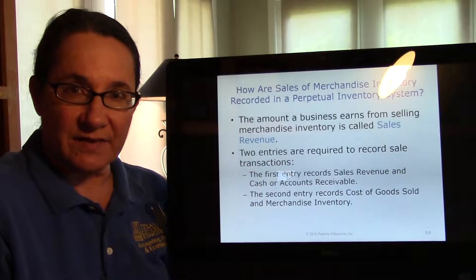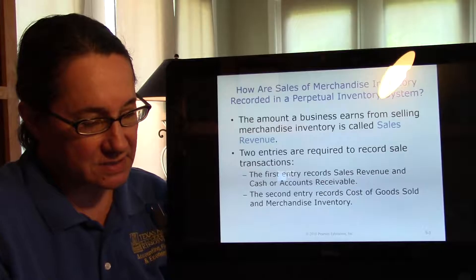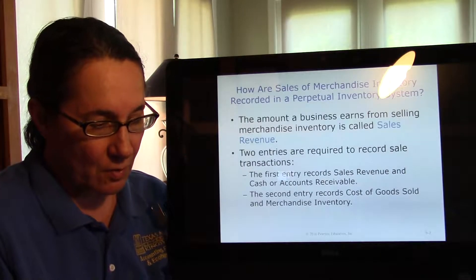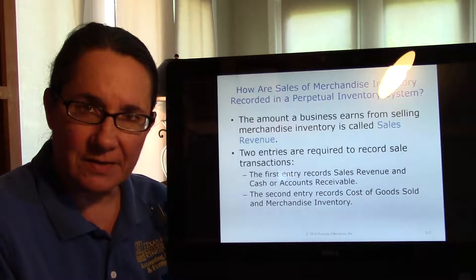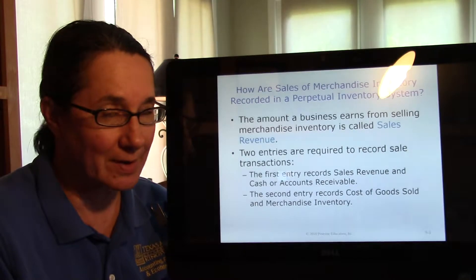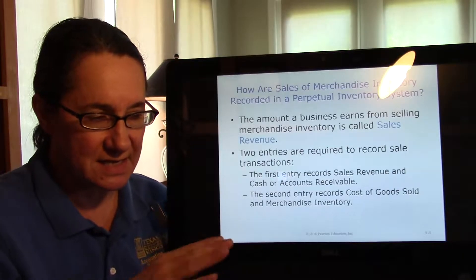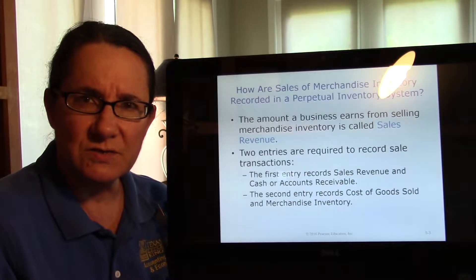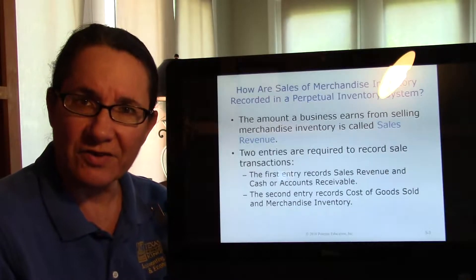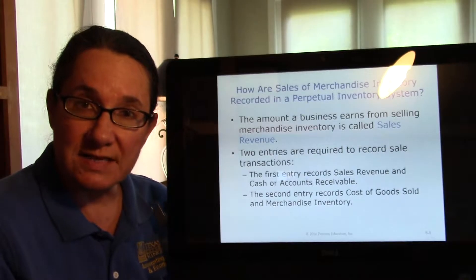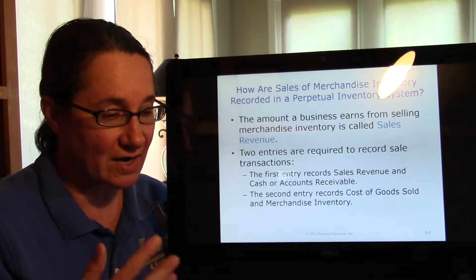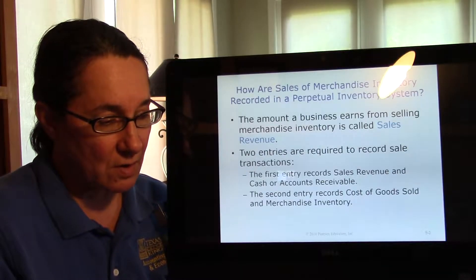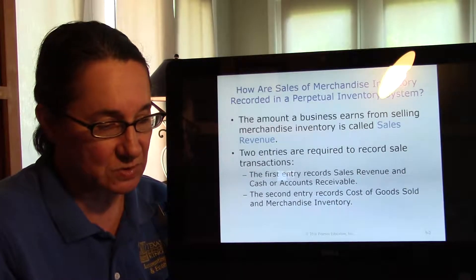In a merchandising firm, it's super important to keep good track of inventory. We learned last video that there's a kind of inventory called periodic that we're not going to do — so anything in this chapter on periodic, don't worry about it. We're going to assume that as we sell something, we're going to keep track of it, and every time we sell it, we reduce our inventory. This is what we call perpetual inventory.